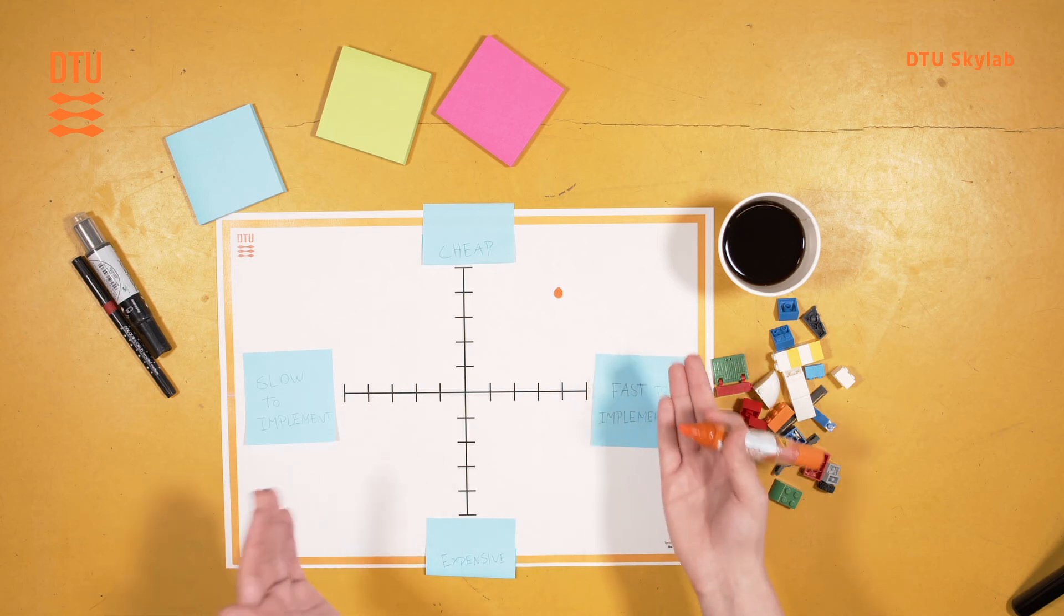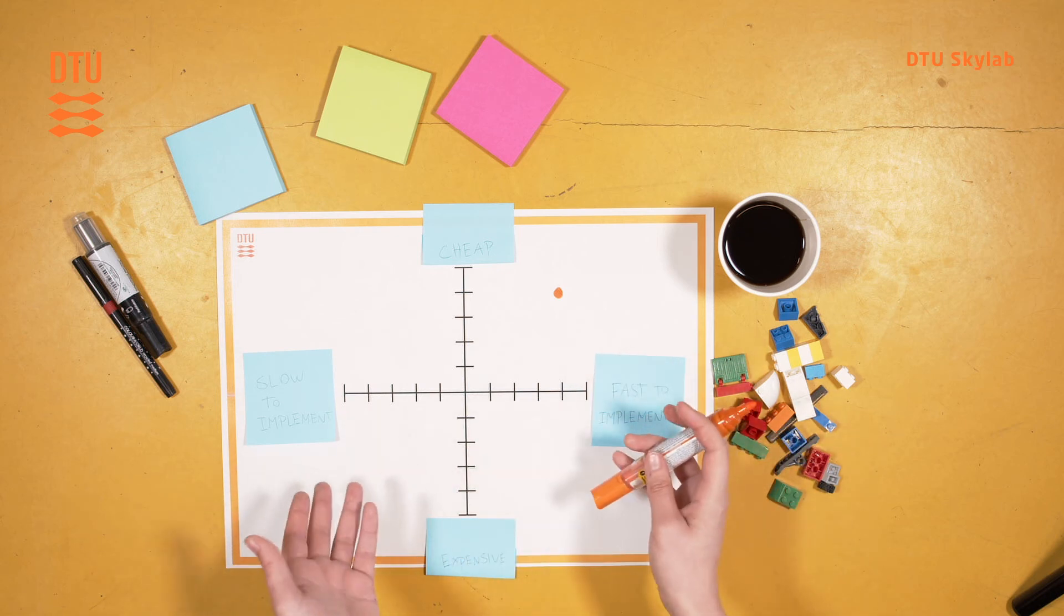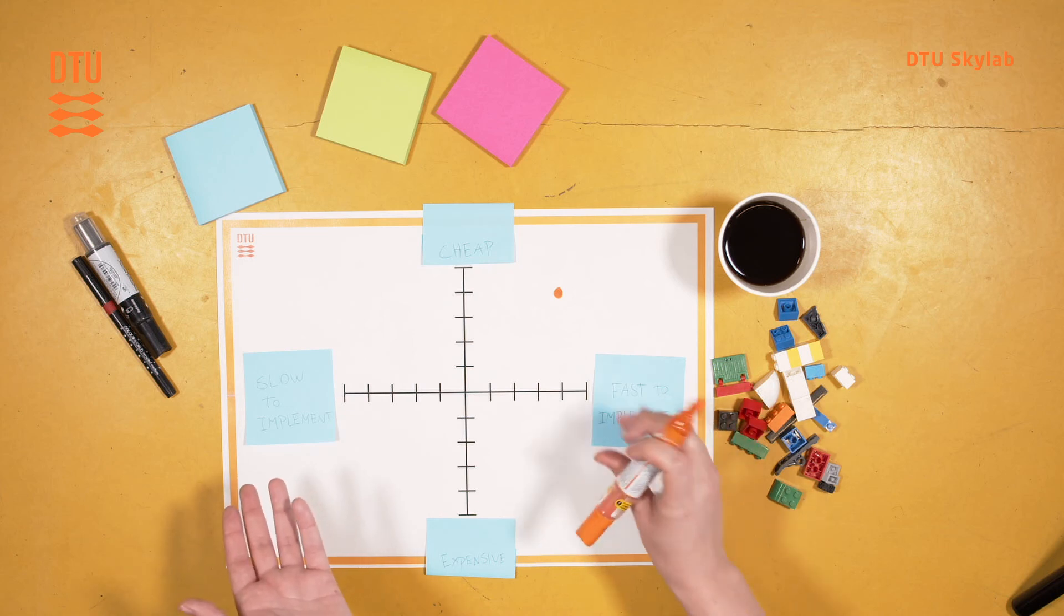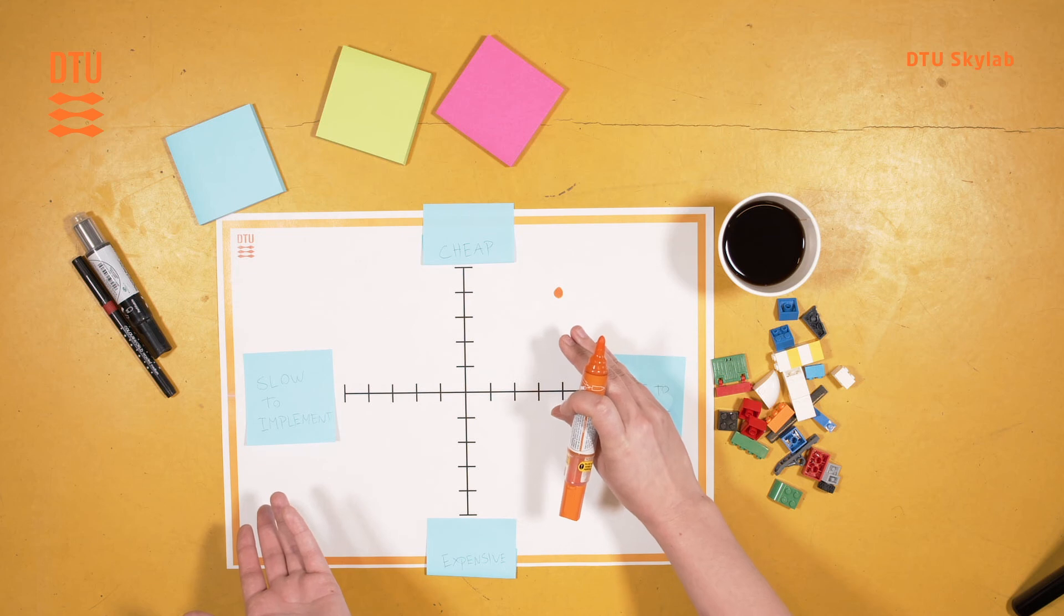Optimally you have one template per concept, so for it to be more simple to read for all participants you only have one dot. That dot can also be a post-it.